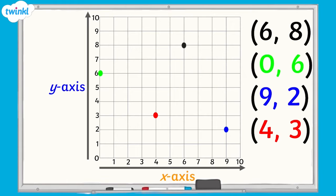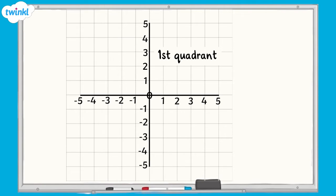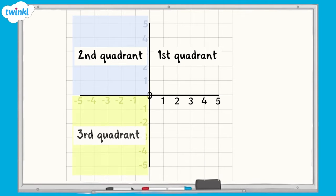Well done if you got all of those correct. So far we've looked at the first quadrant of a coordinates grid. Now let's look at a coordinates grid that has 4 quadrants. As you can see there is the first quadrant, the second quadrant, third quadrant and fourth quadrant.